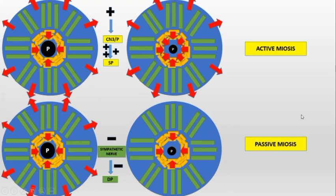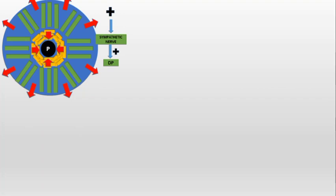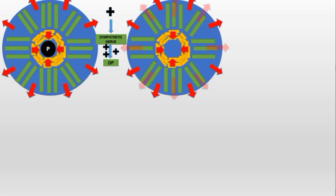If we stimulate the sympathetic nerve more, this causes further stimulation of the dilator pupillae. There is more action done by the dilator pupillae, so the pupil gets big. This process is done actively by stimulation of the dilator pupillae, and the pupil becomes big — so this is called active mydriasis.